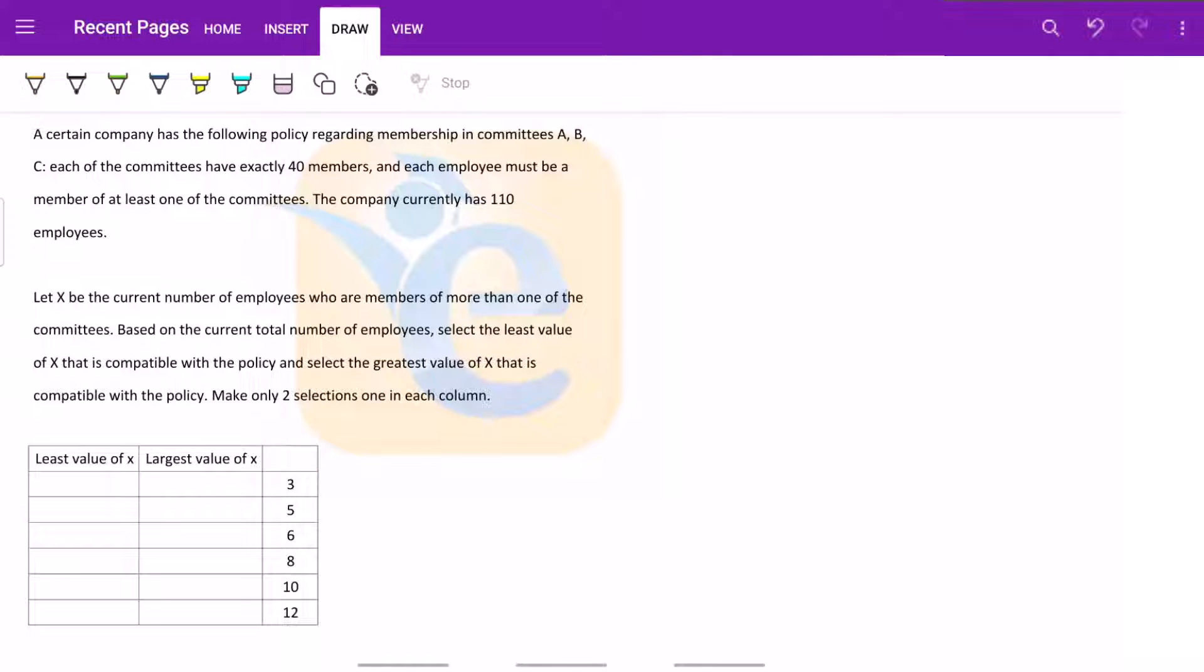Hello and welcome back to yet another solution of an official DI question. This is a question that is purely based on your ability to infer data set and put it in a systematic manner. Here we would be using Venn diagram for the same. Let us jump directly into it.